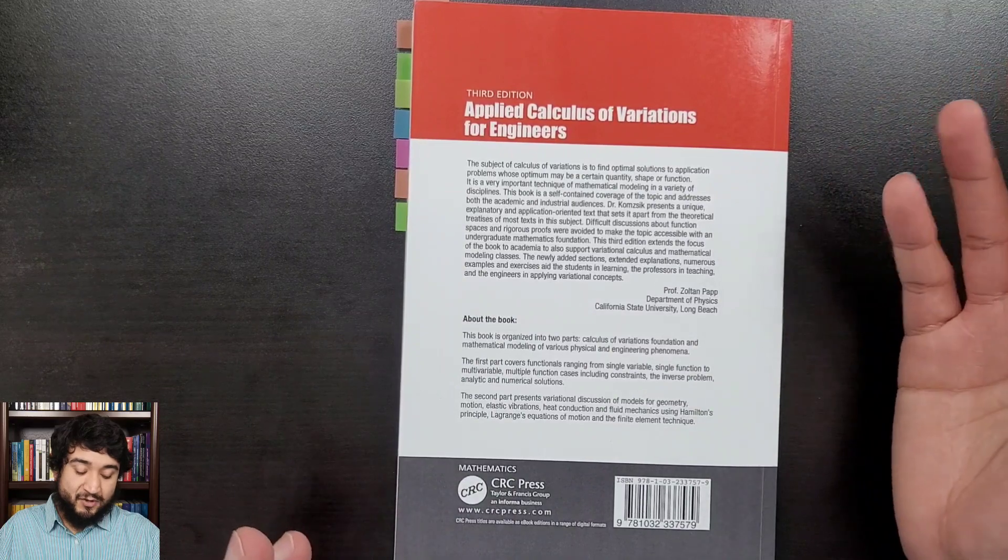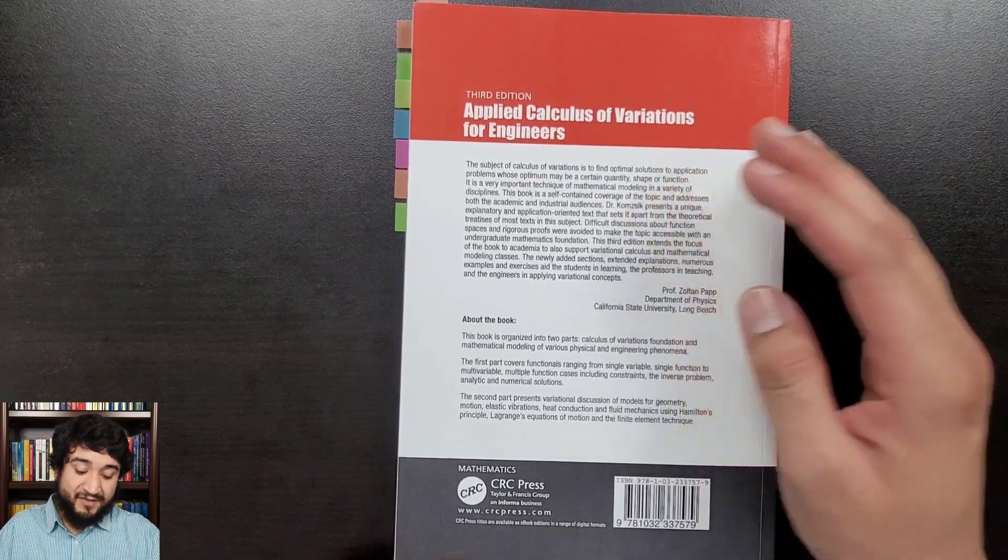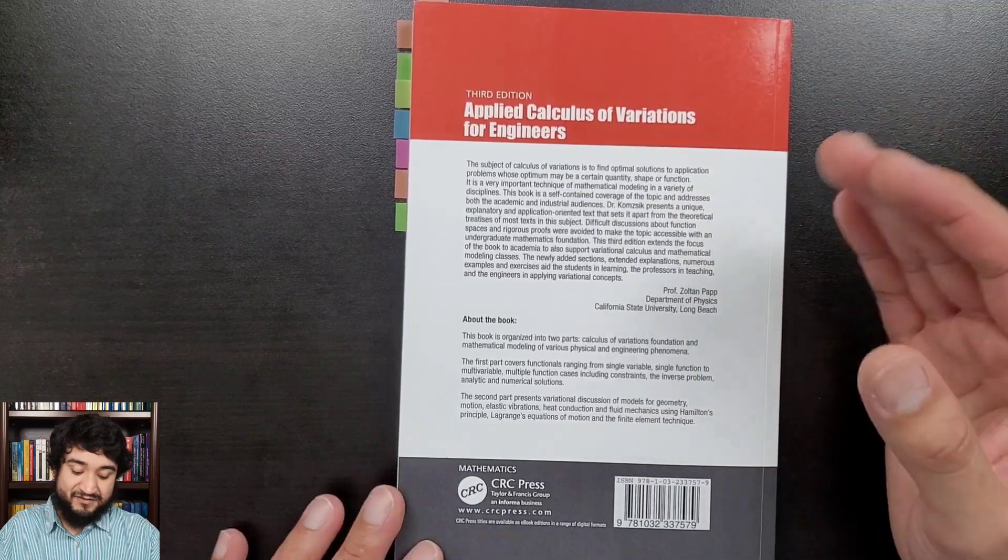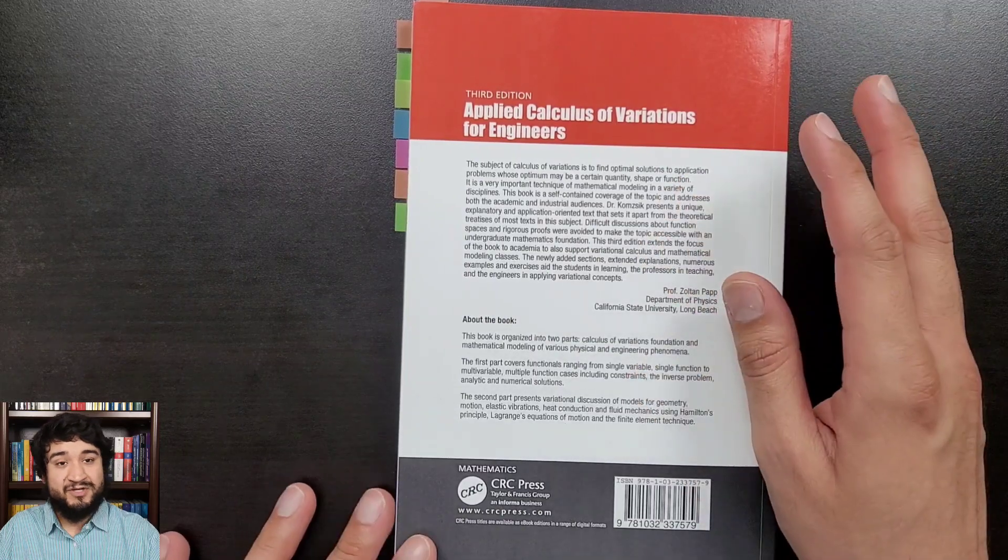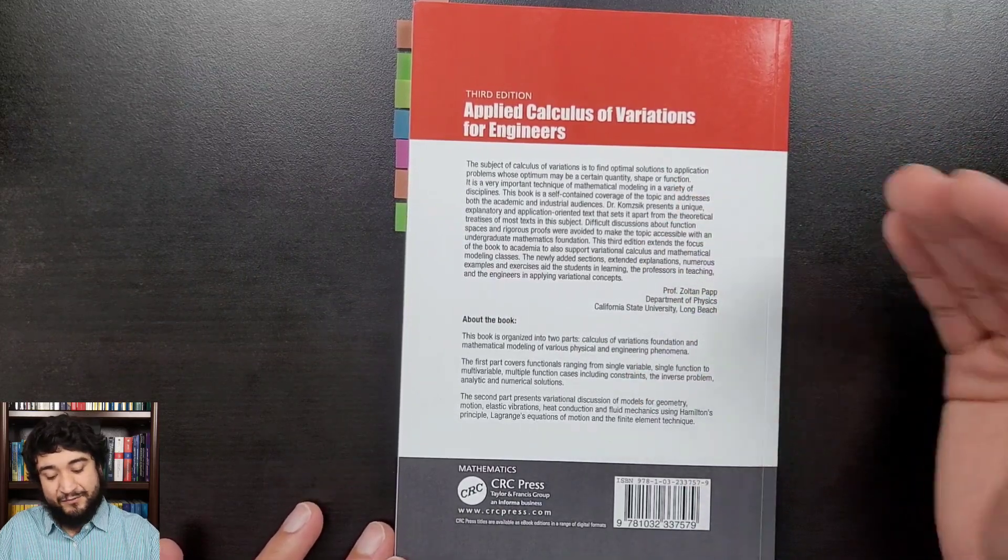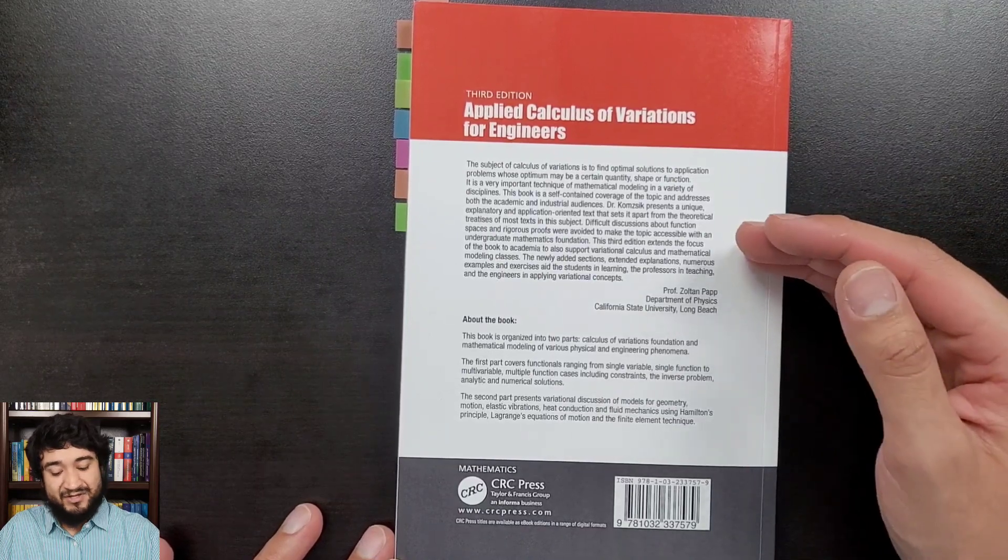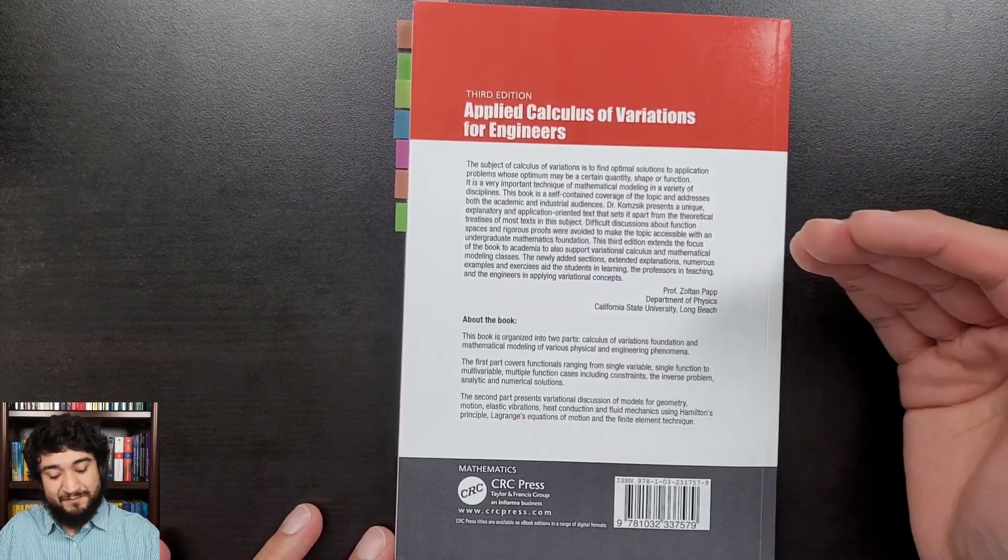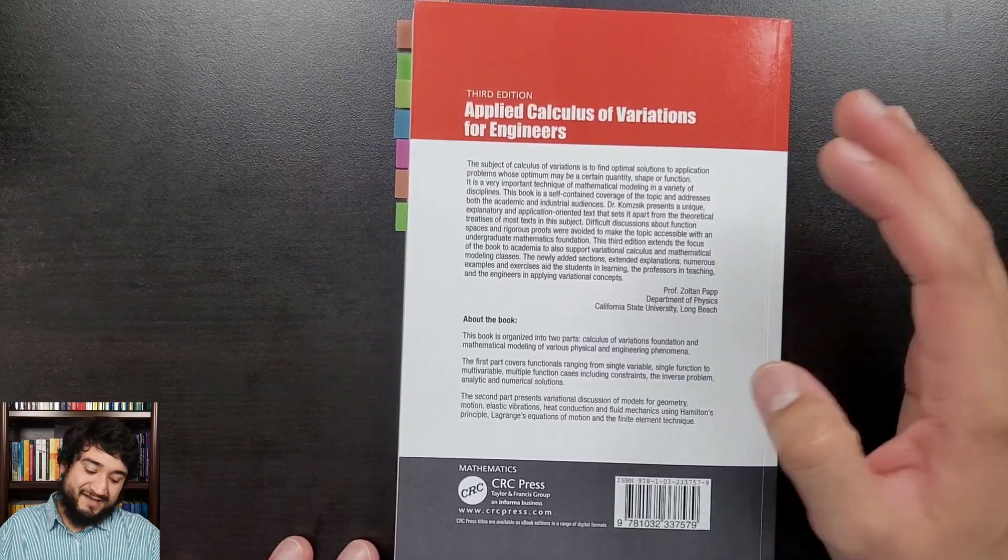But yeah, hopefully you all find this book interesting. I thought it was awesome. The first chapter, I thought it was unique—I've seen nothing like that first chapter in any other book. They kind of just want to force-feed you function spaces in every single book on calculus of variations I've seen. Maybe not every single one, but a lot of them do. So yeah, I like this one a lot.